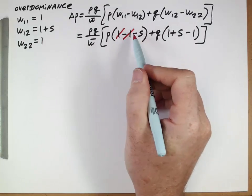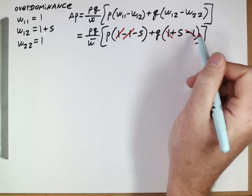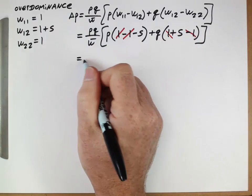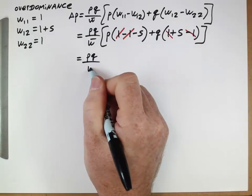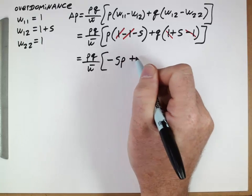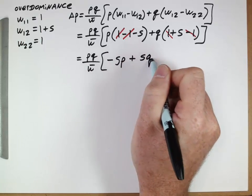This and this cancel, so we have a negative S. This and this cancel, so we have a positive S. So that gives us PQ over W bar, minus S times P plus S times Q.